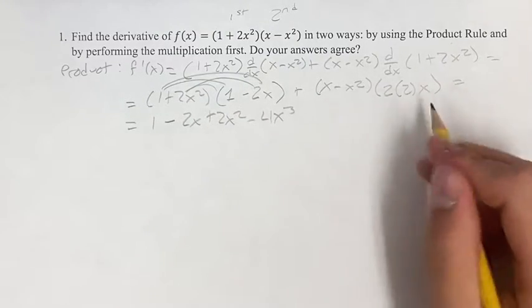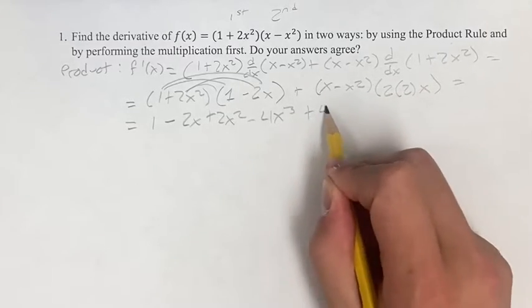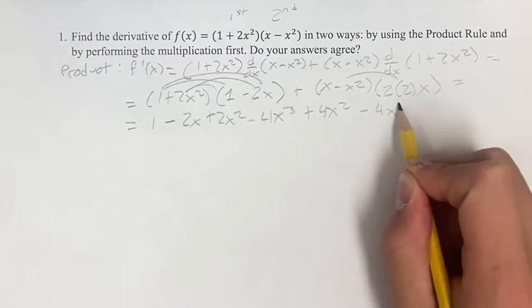...and then this is going to be x. If you think of this as 4x, 4x times x, we have plus 4x², minus 4x³.